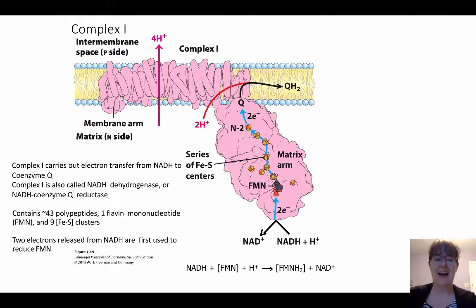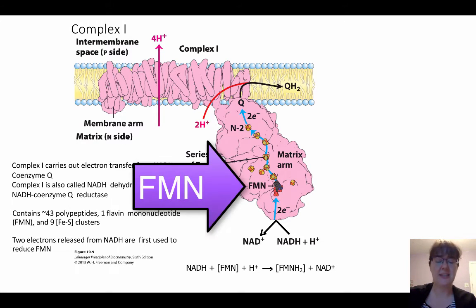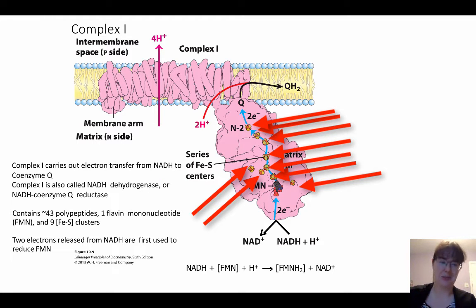This thing is enormous. It has about 43 polypeptides, one flavin mononucleotide, that's the FMN located in there, and nine iron sulfur clusters.